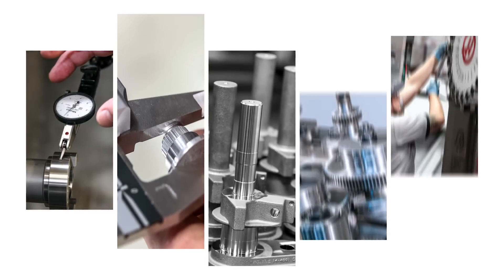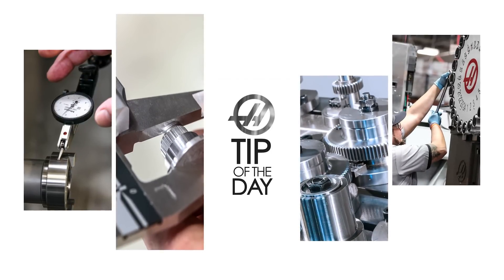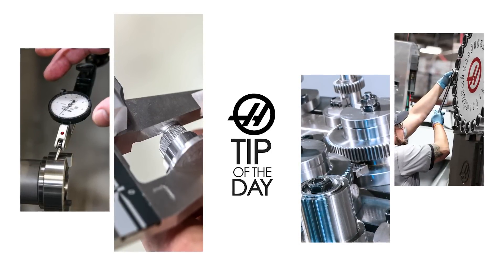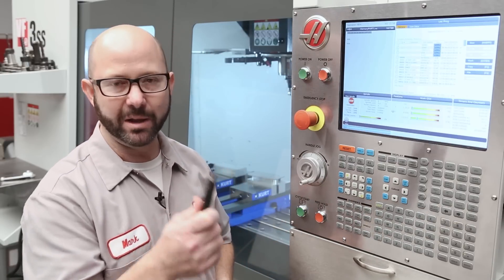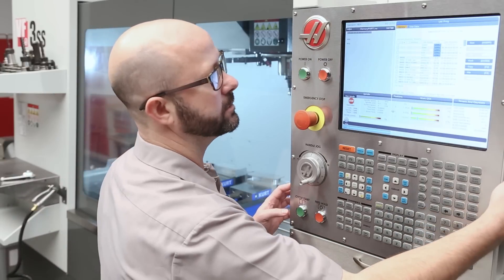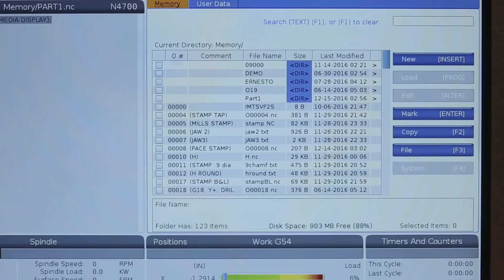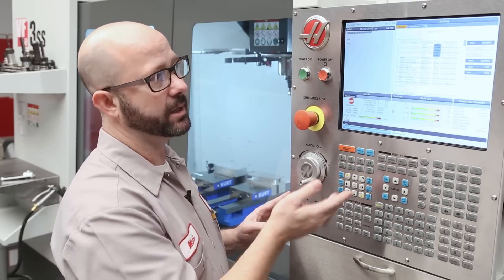If you know how to load a program into memory, then you pretty much know how to load a media file onto your control as well. I've got all my files in a folder on my USB, so all I've got to do is load this onto the machine and copy them into memory.